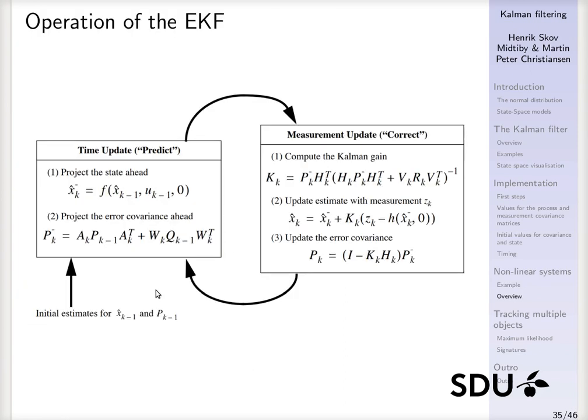And the extended Kalman filter, or EKF, which is written here, it uses the exact same structure as the Kalman filter we looked at earlier. The main difference is that this error covariance matrix is updated in a slightly different way.